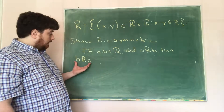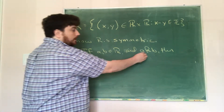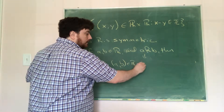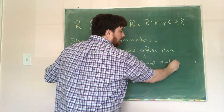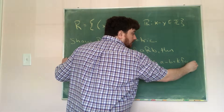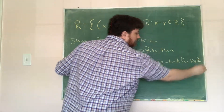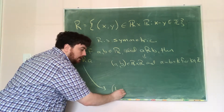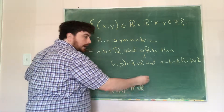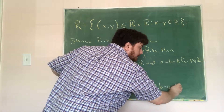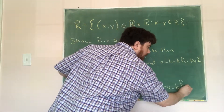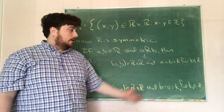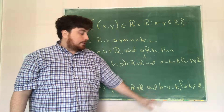What does it mean for a to be related to b? Well, (a, b) is in r cross r, and a minus b equals k for some integer k. What we need to show is that (b, a) is in r cross r, and that b minus a equals some integer k1. So we have to show that if a minus b is an integer, then b minus a is an integer.